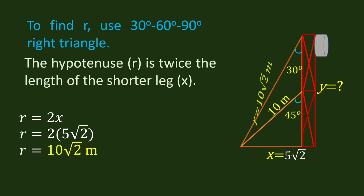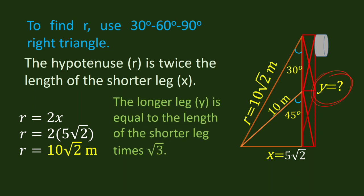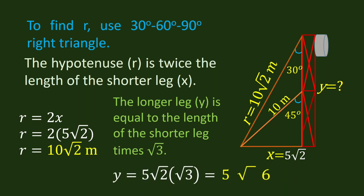Also, by using this same special right triangle, we can find the height of the tower. The longer leg is equal to the shorter leg times square root of 3. Our shorter leg is 5 square root of 2, so we multiply by square root of 3. The answer is 5 square root of 6.